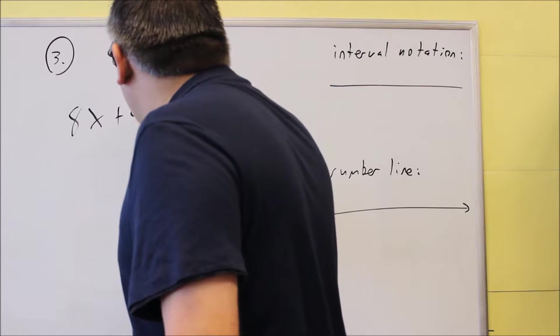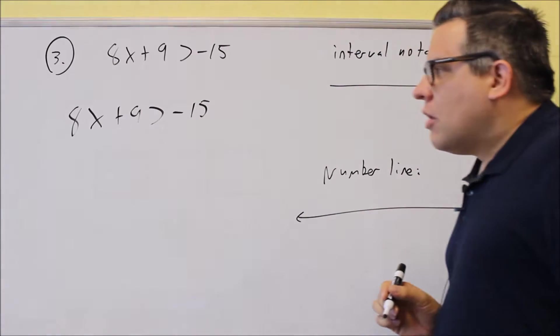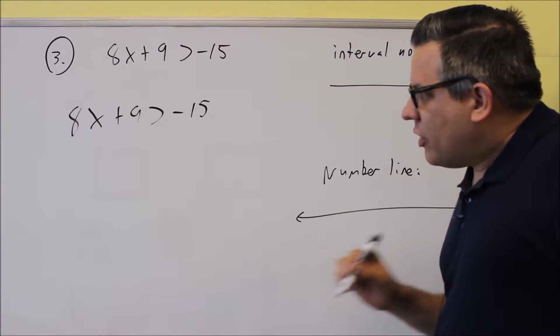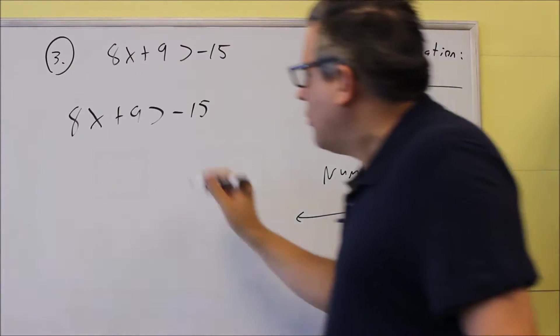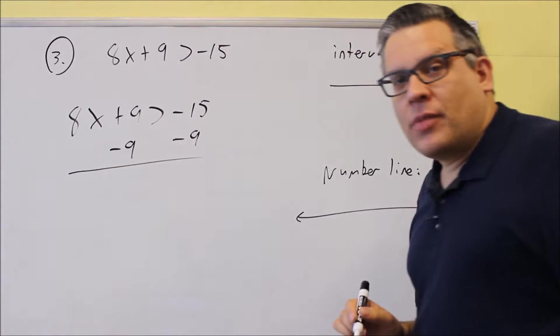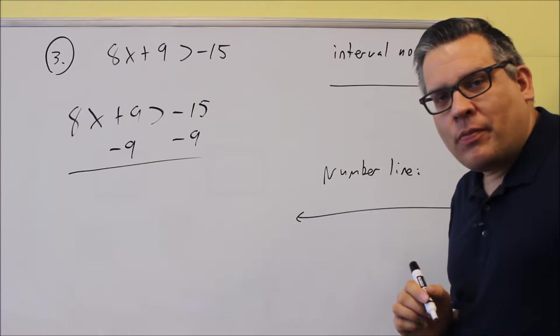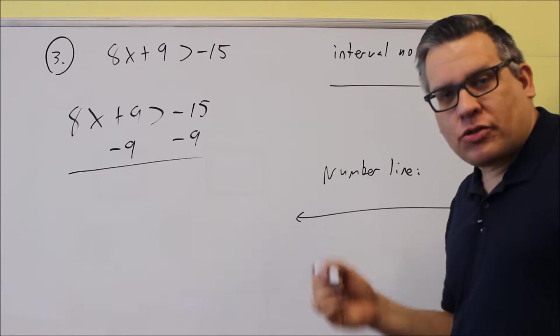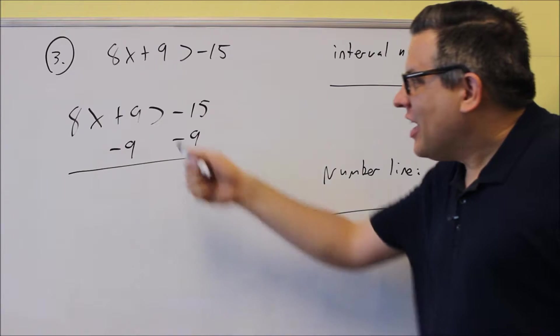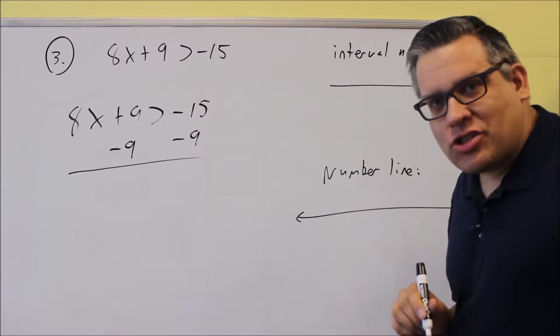The first thing I'll do is rewrite the problem. Okay, so what we want to do is get x by itself. So we're going to first start by subtracting 9 from both sides. Now, the only time that you switch an inequality symbol is when you're dividing or multiplying by a negative number.